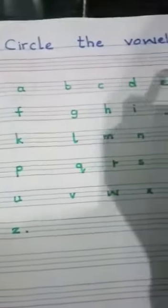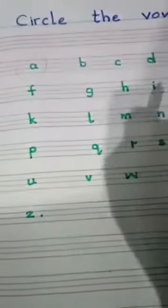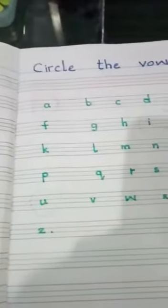How we circle the vowels? We like this: A, E, I, O, and U. Now we have done this worksheet.